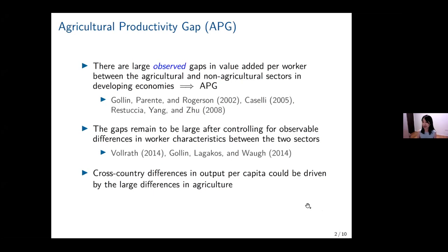There are large observed labor productivity gaps between the agricultural sector and the non-agriculture sector in many developing countries. In the literature, this phenomenon is known as the agricultural productivity gap, or APG for short. Given that a large portion of the labor force in developing countries is employed in agriculture, it is important to understand the driving forces of the observed gaps in order to better understand income differences across countries and to better design policies.